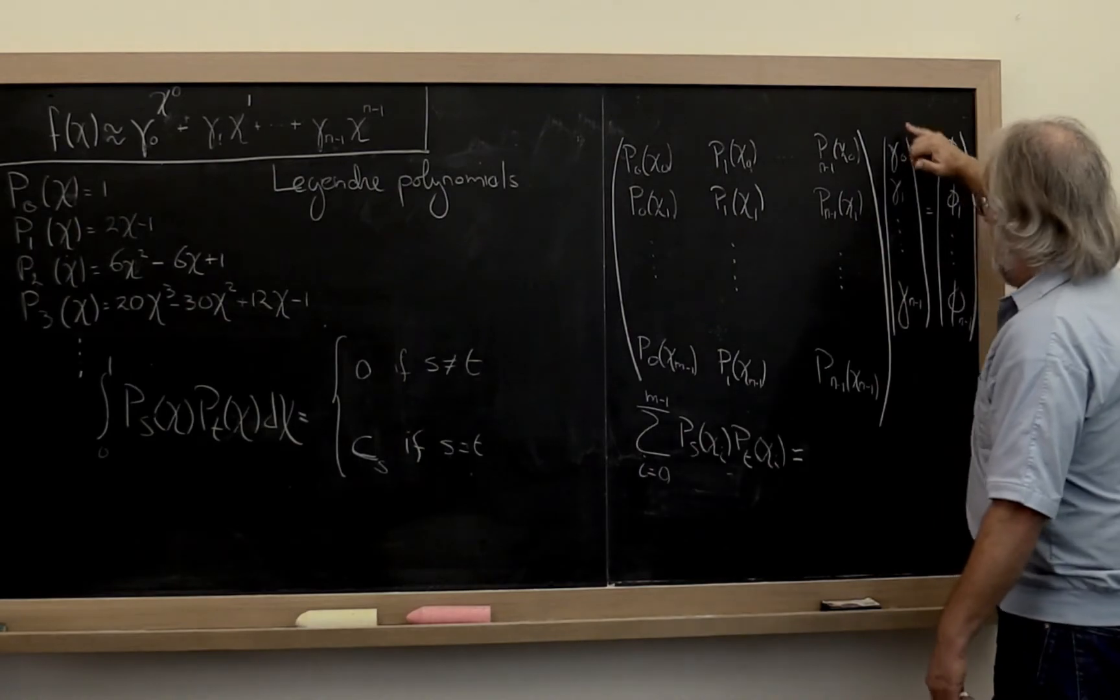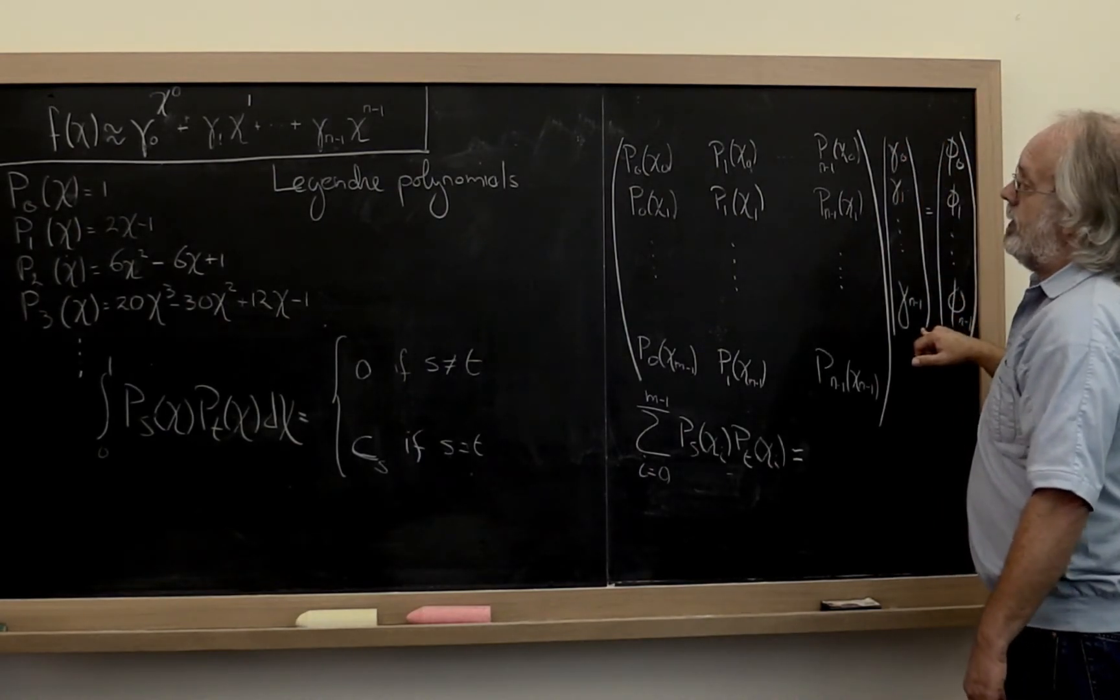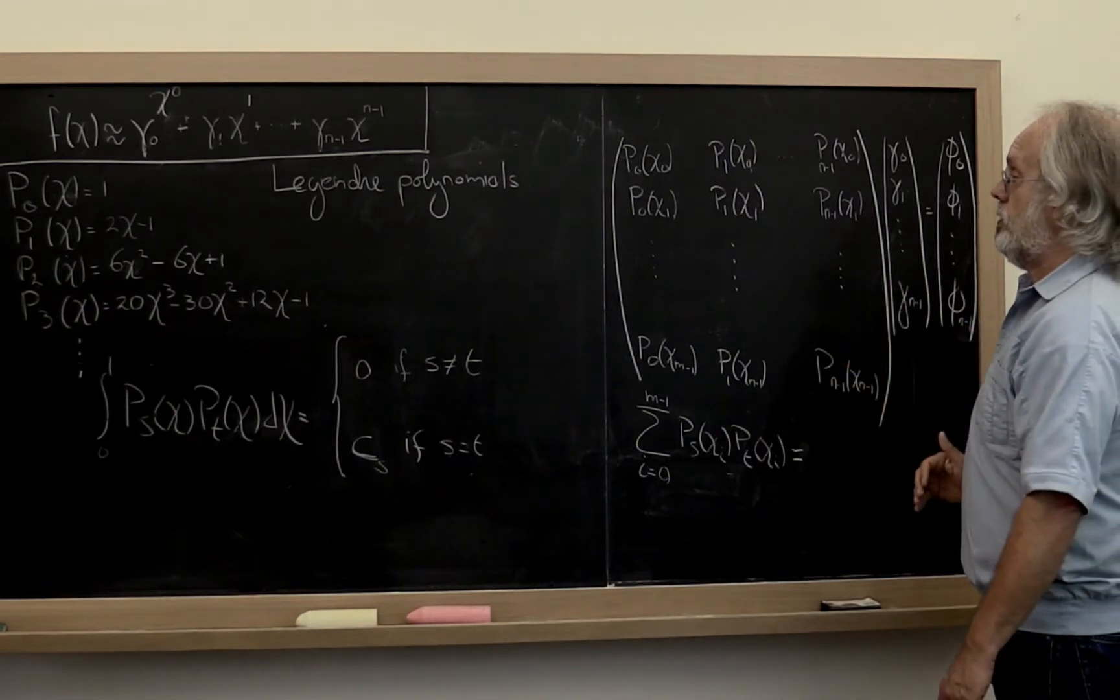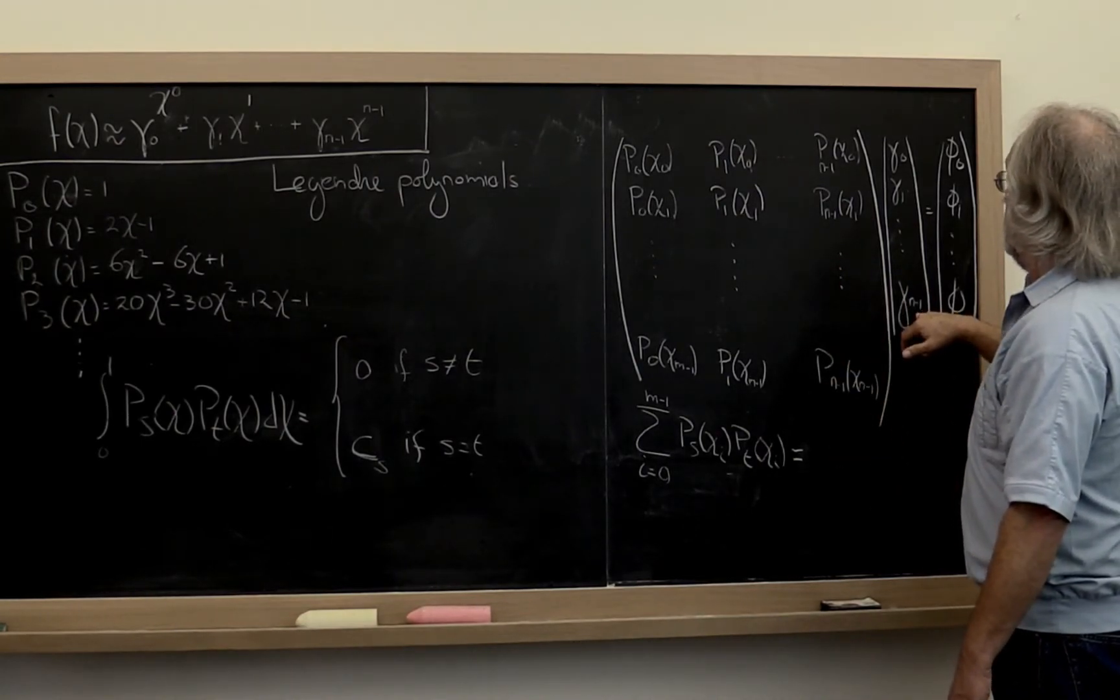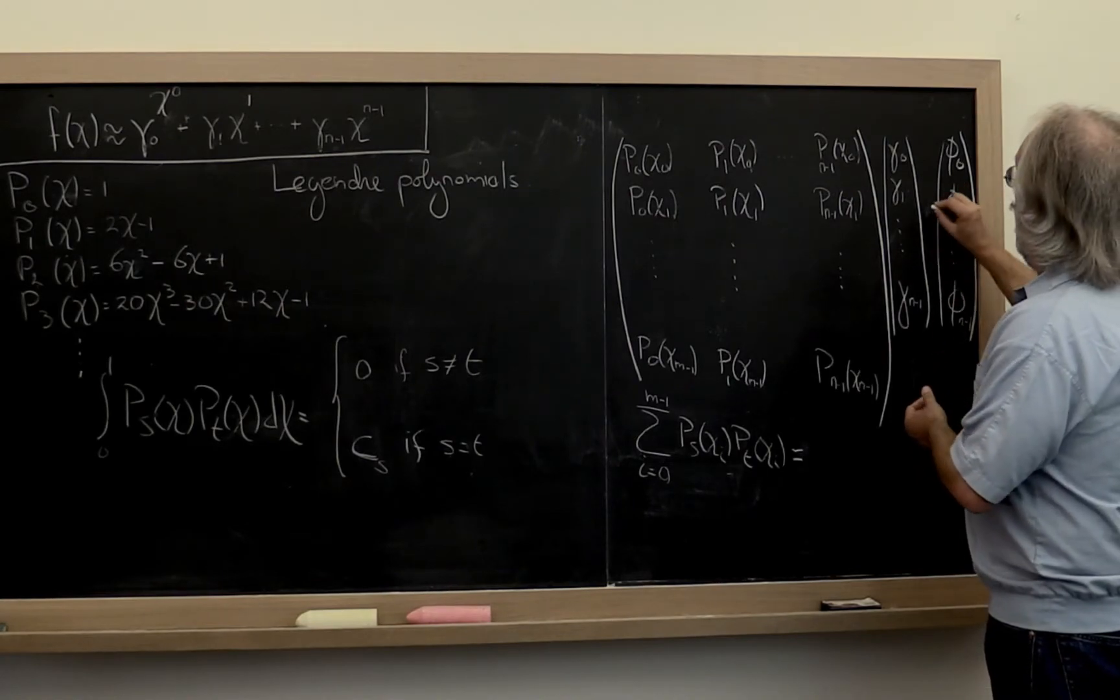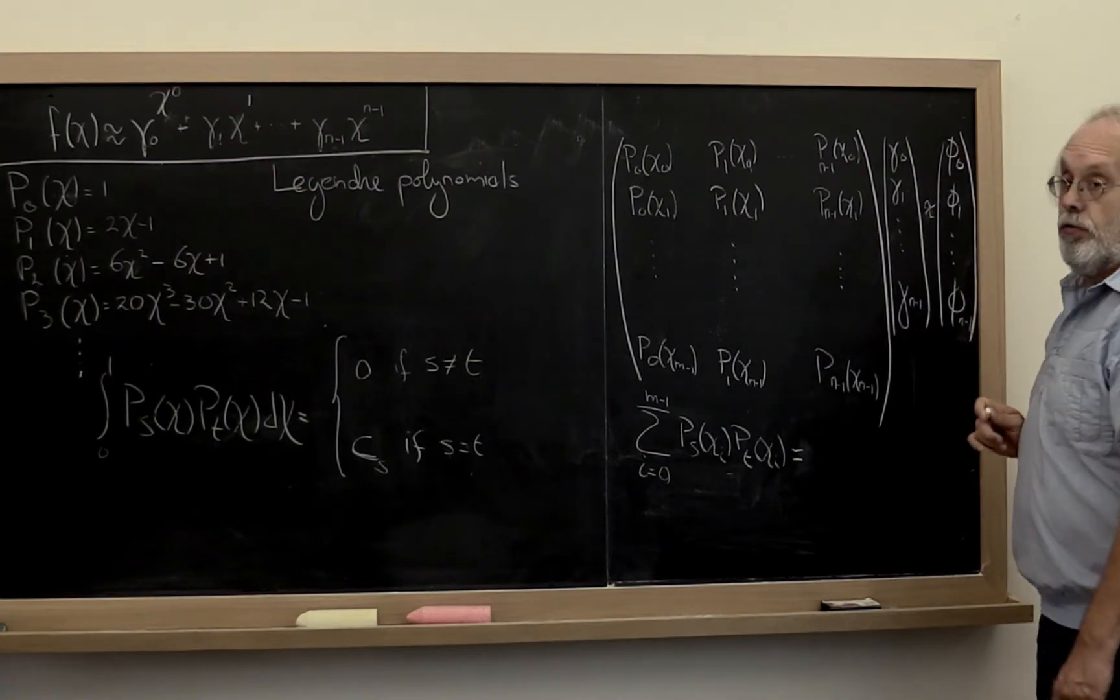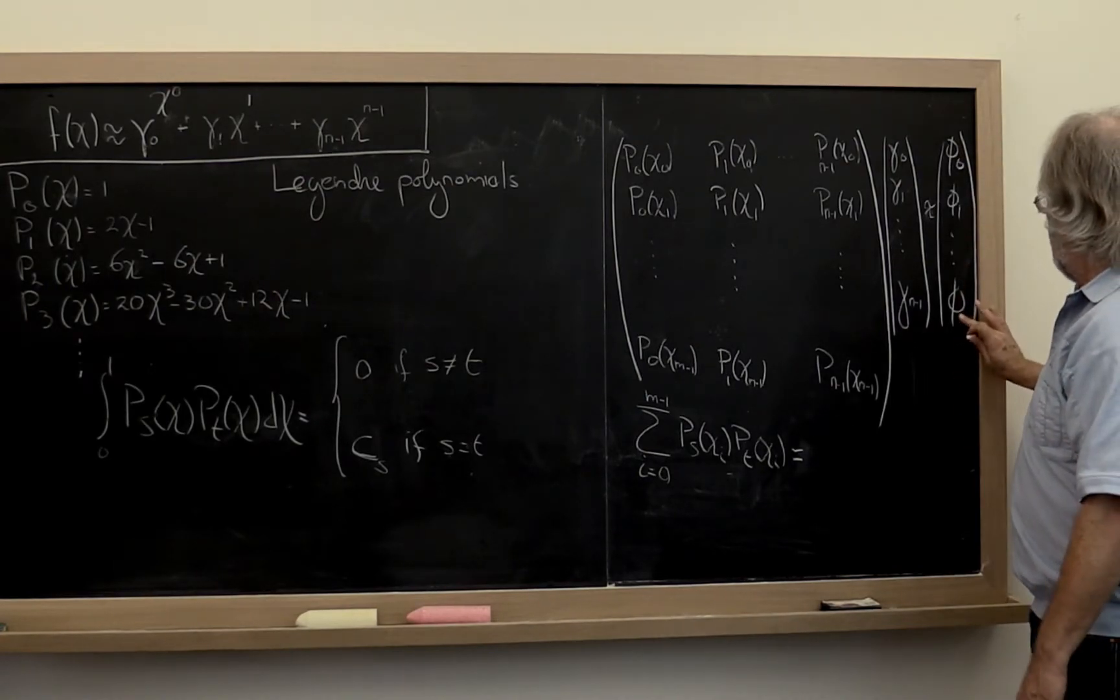And then multiplying that times the vector that now become the coefficients with which you take a linear combination of these columns. You would like for that to be approximately equal to phi 0 through phi n minus 1.